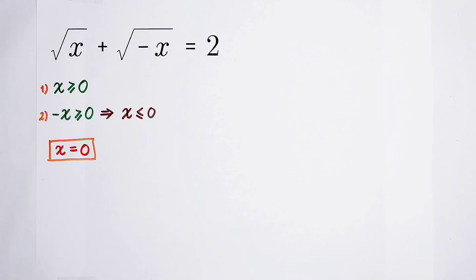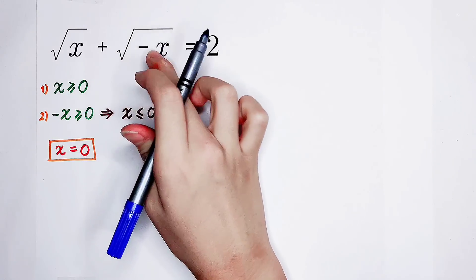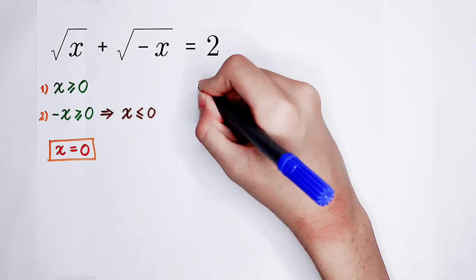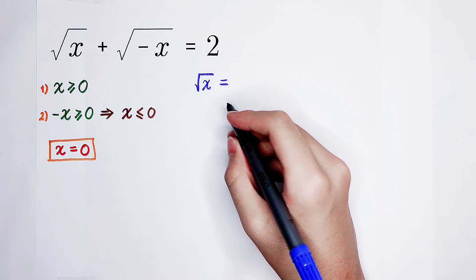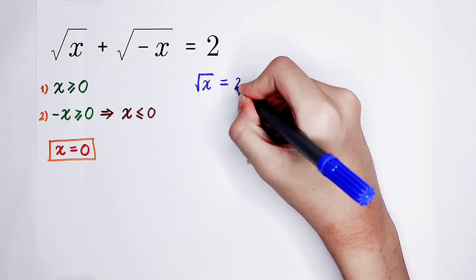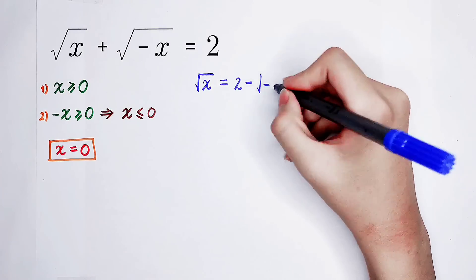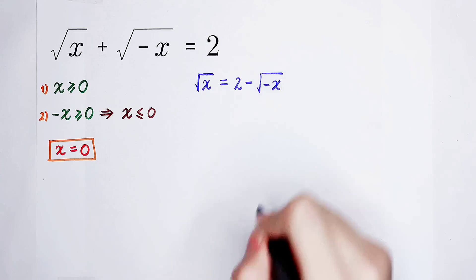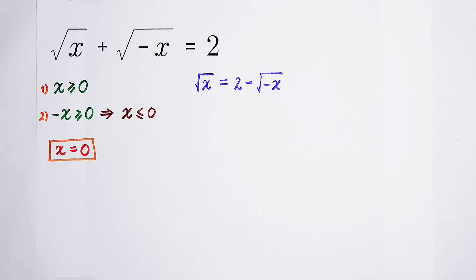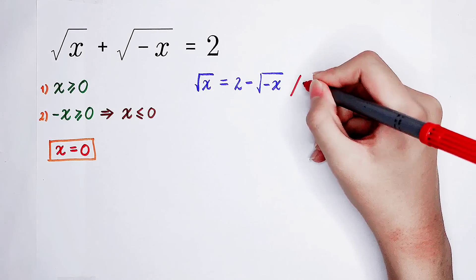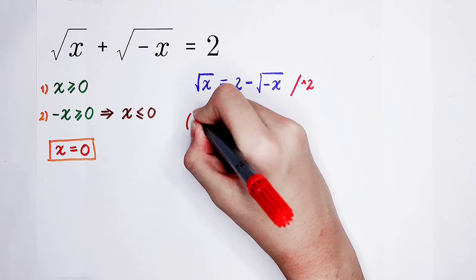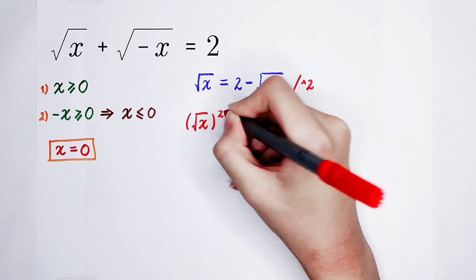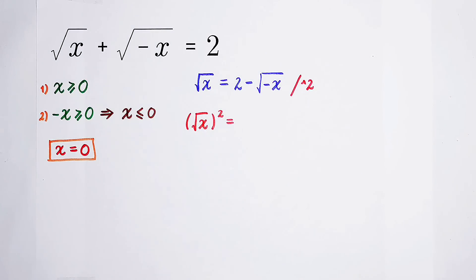Although there aren't any real roots, we can continue solving this equation. As our first step, we subtract the square root of negative x from both sides. What's on the left-hand side is the square root of x, and on the right-hand side is 2 minus the square root of negative x. Then, of course, our only choice is to square both sides. For the left-hand side, the square root of x all squared becomes x.